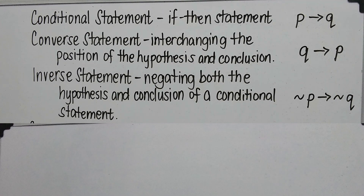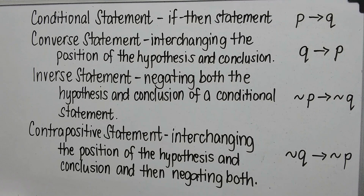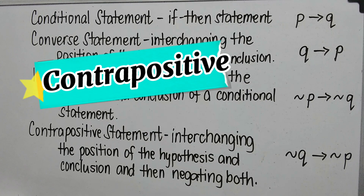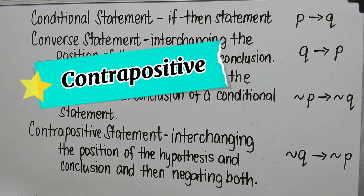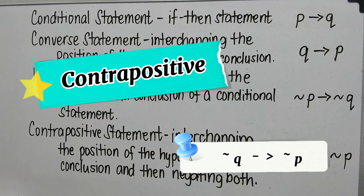And then we have the last one, which is the contrapositive statement — interchanging the position of the hypothesis and conclusion, and then negating both. It symbolizes not Q implies not P.